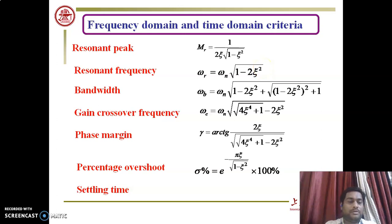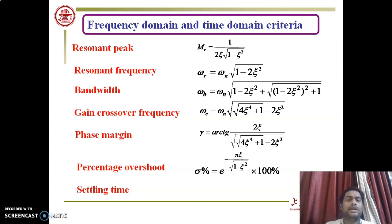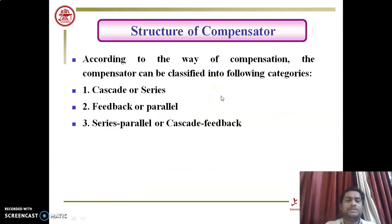These are the criteria required for designing any compensator. Frequency domain and time domain criteria are must-know for any system. These include resonant peak, resonant frequency, bandwidth, gain crossover frequency, phase margin, percentage overshoot, and settling time.